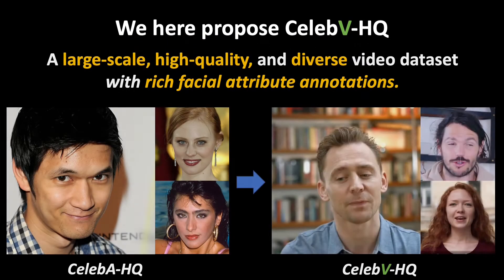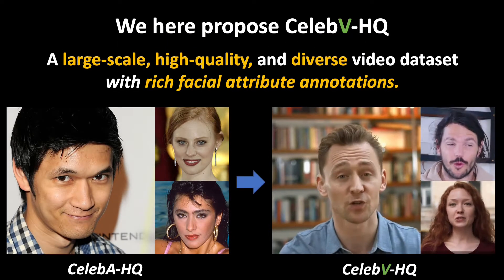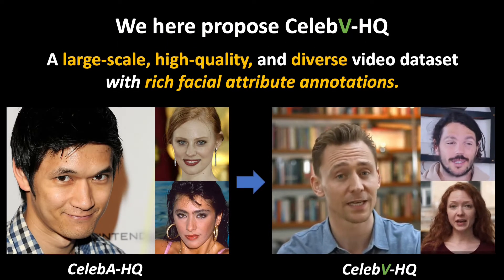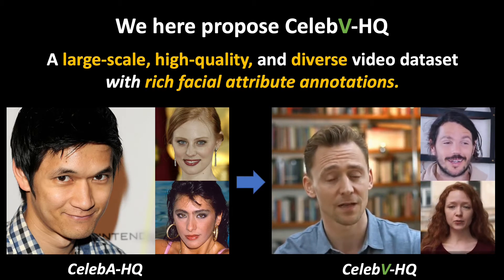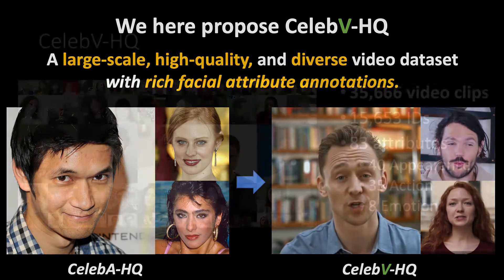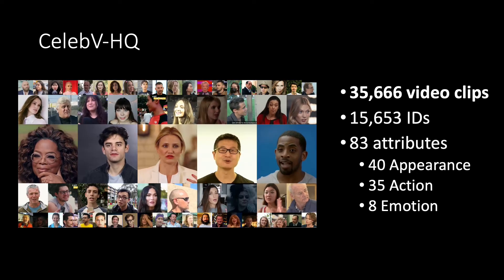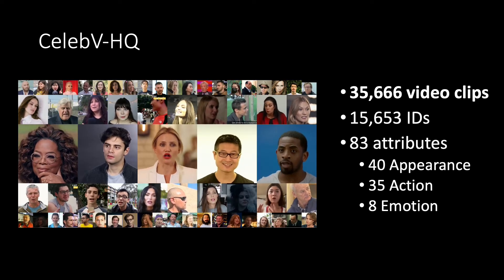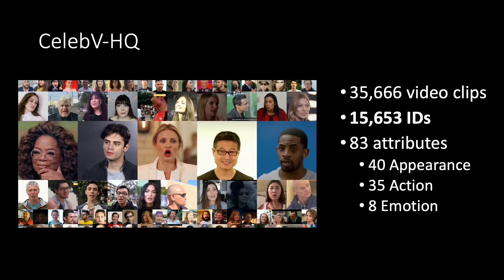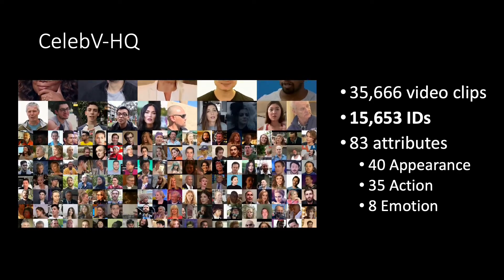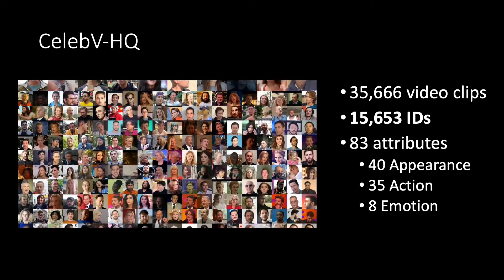In this work, we introduce a large-scale, high-quality, and diverse facial attributes video dataset named the High-Quality Celebrity Video Dataset. CelebVHQ contains 35,666 in-the-wild video clips, involving 15,653 person identities and 83 manually labeled facial attributes.